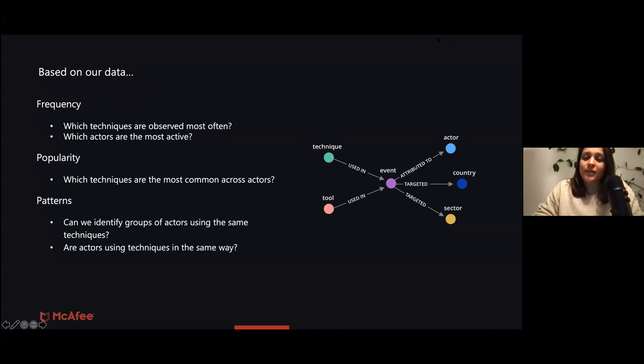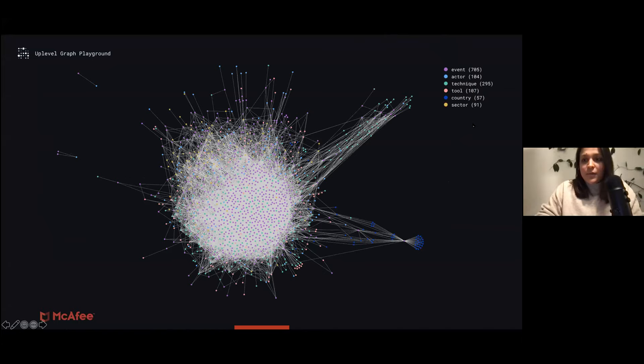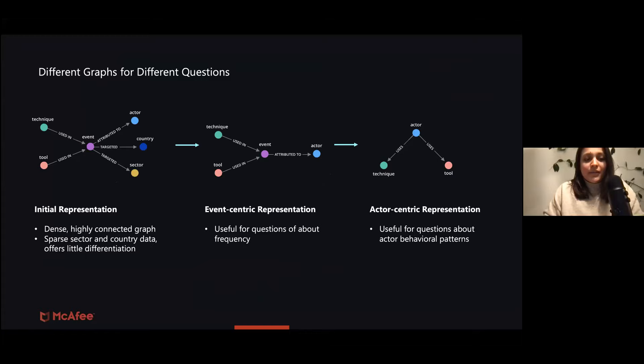The way I represented the data originally was event-based. So we have technique used in event, tool used in event, targeted country, attributed to actor, and targeted sector. And this is basically what the output was. By graphing all the events in this representation, we have this huge, big, big blob of a graph. So the first thing we do notice is that it's very dense and highly connected. And the second thing we do notice as well is that we have very sparse sector and country information. Often either the country is not reported because it just targets every country and there's no specific country, or an attack is directed at multiple sectors. So this is why we chose in our event-centric representation to just scratch the country and sector node.